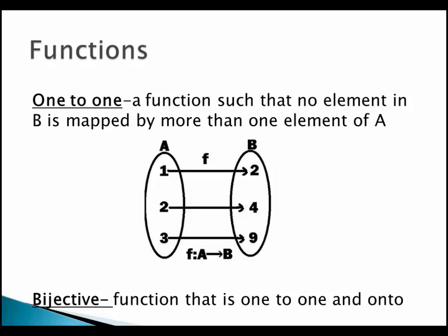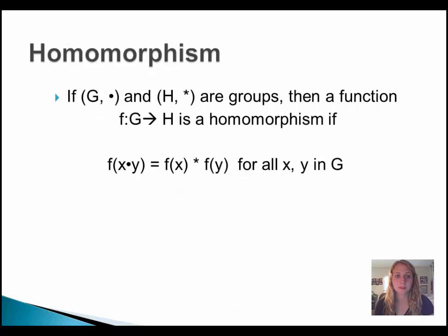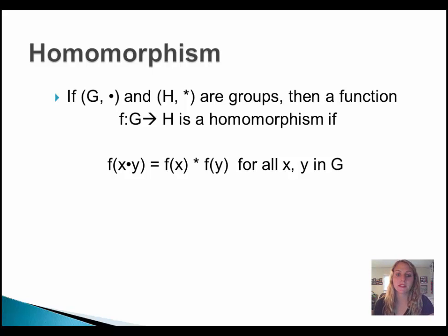Now we're ready to deal with homomorphisms. A homomorphism is defined as follows: if we have a group G under the operation dot and H under the operation star, then a function f from G to H is a homomorphism if f(x · y) = f(x) ★ f(y) for all x and y in G.